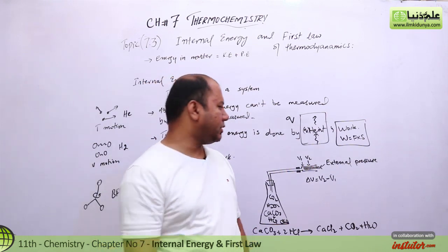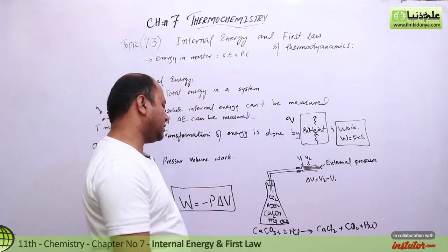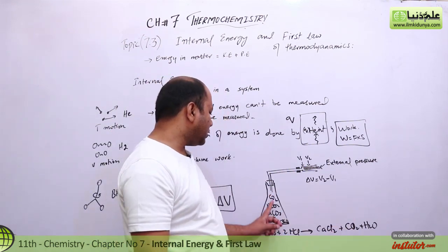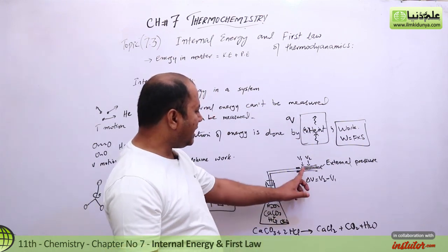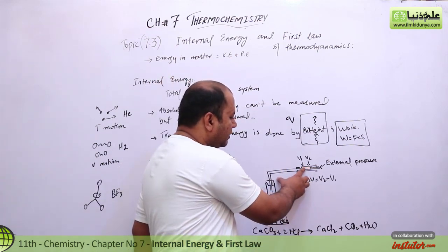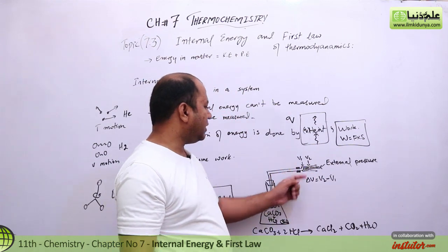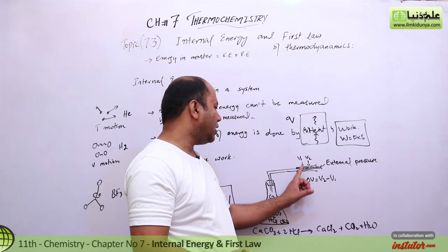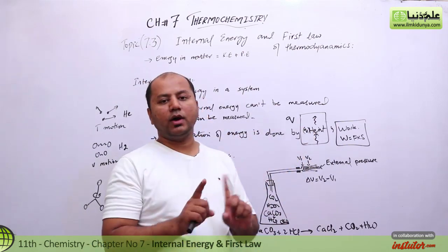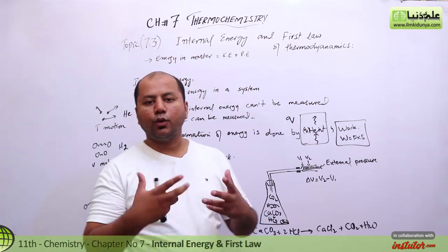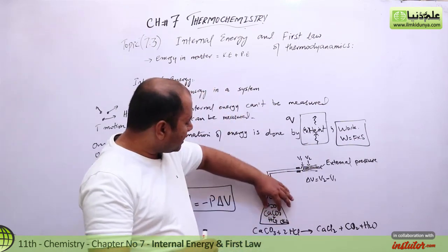For our experiment, we have a flask containing calcium carbonate and HCl. These two react and carbon dioxide gas is created, which goes through a delivery tube. There is a piston on top — initially a small volume, but when CO2 is produced, the volume increases from V1 to V2. This change in volume represents work done by the system, using its internal energy.